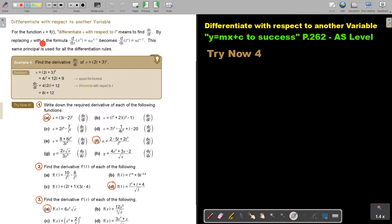By replacing x with t, the formula d over dx becomes just in the place of x, I just write a t. This same principle is used for all the differentiation rules. So the rules stay exactly the same. It's just that you have to concentrate on the variables and writing it at the correct place.